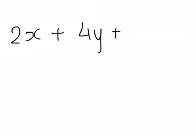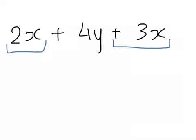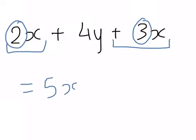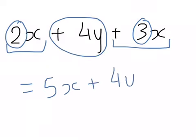For example, if I have 2x + 4y + 3x, I want to simplify that. My like terms would be 2x and +3x. So 2x + 3x, I add my coefficients, which gives me 5x, and the only thing left over is +4y. So that is the simplified version of the original algebraic expression.